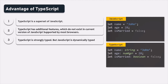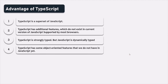TypeScript also has quite a few object-oriented features which we do not have in JavaScript, like interfaces, access modifiers, fields, properties, generics, etc. These features are not available in the current version of JavaScript, but they might be introduced in future versions.